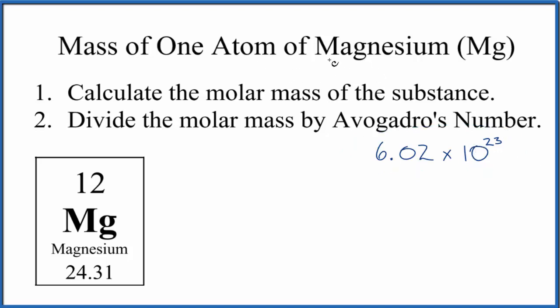That'll give us the mass of one magnesium atom. So the molar mass here is 24.31, and you can think of that as having the units grams per mole. So we have 24.31 grams of magnesium in one mole.